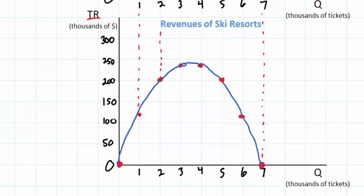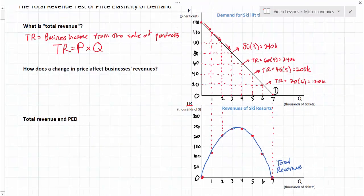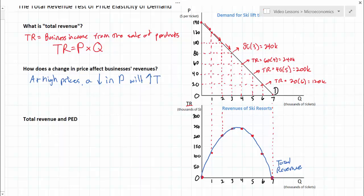This blue line is my total revenue curve. Let's look at that curve and try to draw some conclusions about what it tells us. What we can see is that at high prices, a decrease in price will increase total revenue. That's one conclusion we can draw about the relationship between price and total revenue.